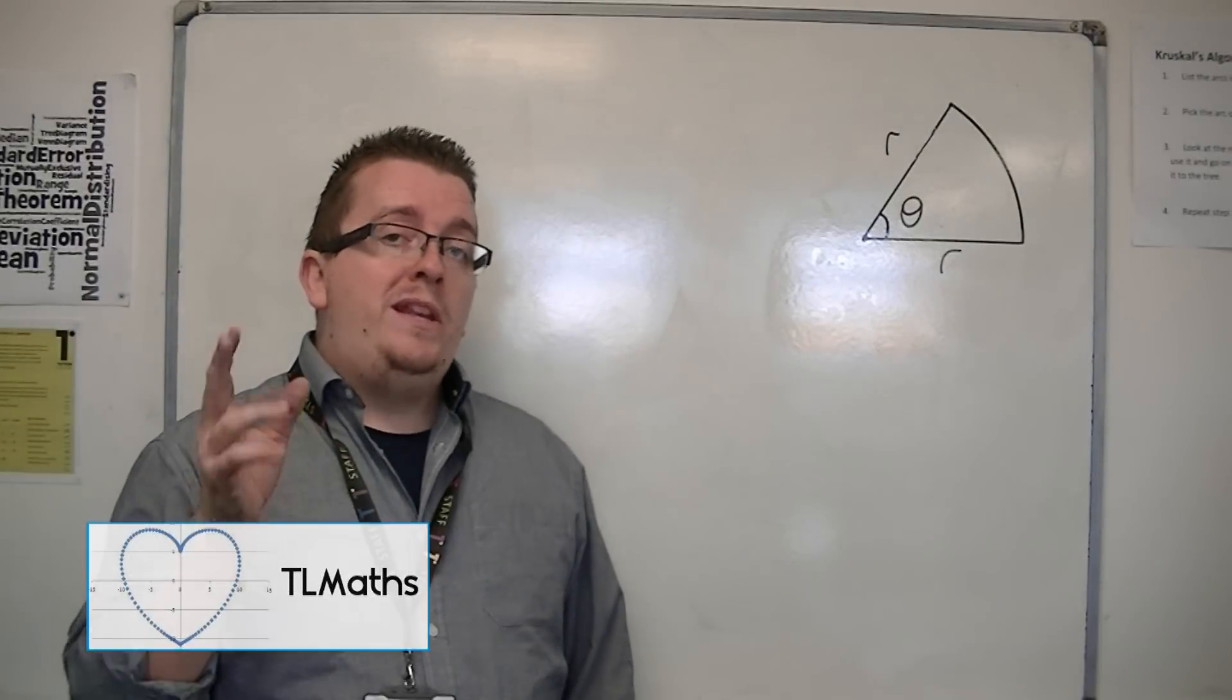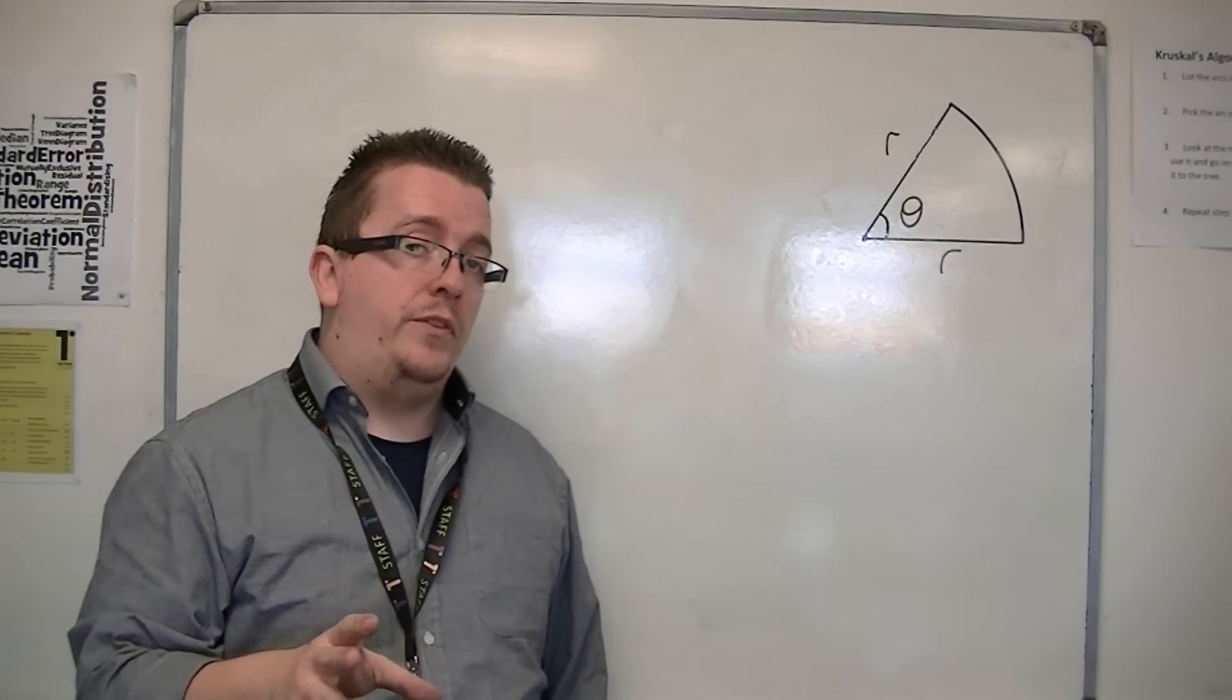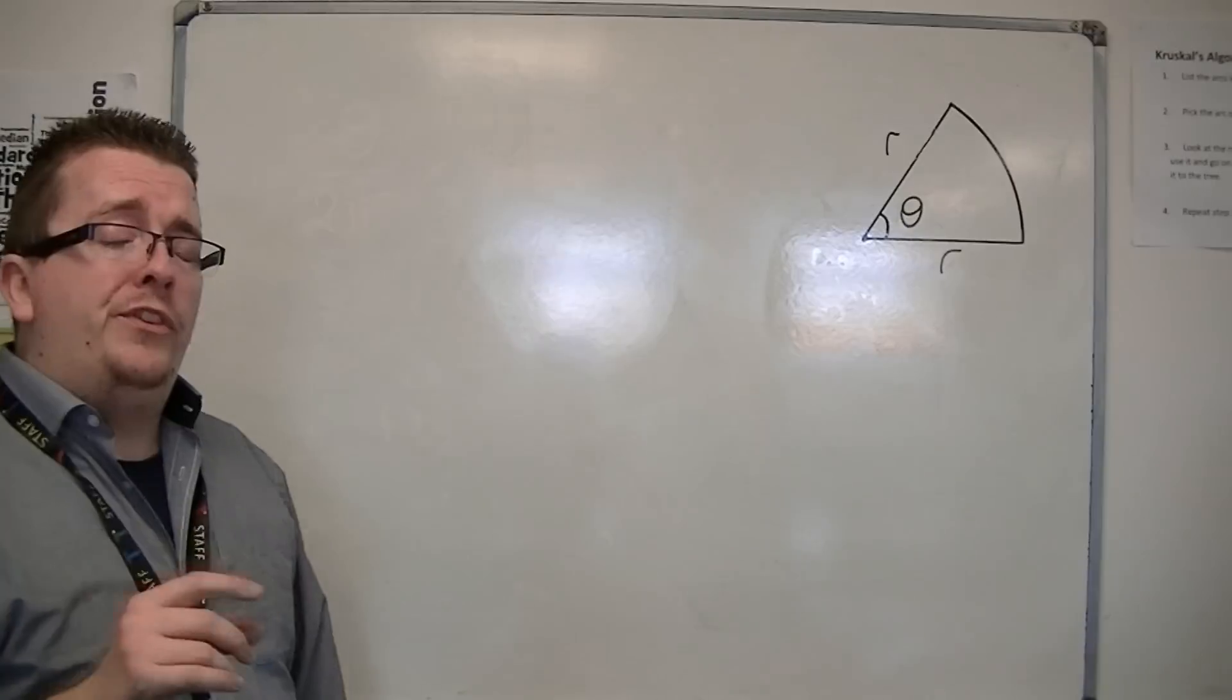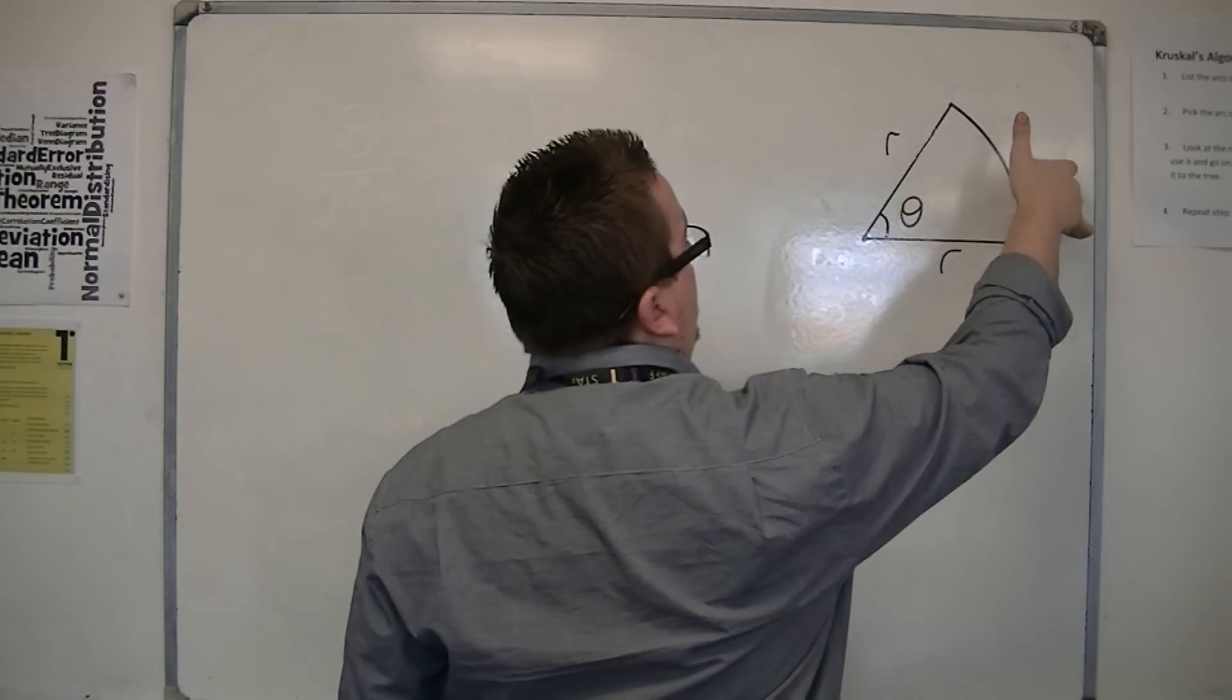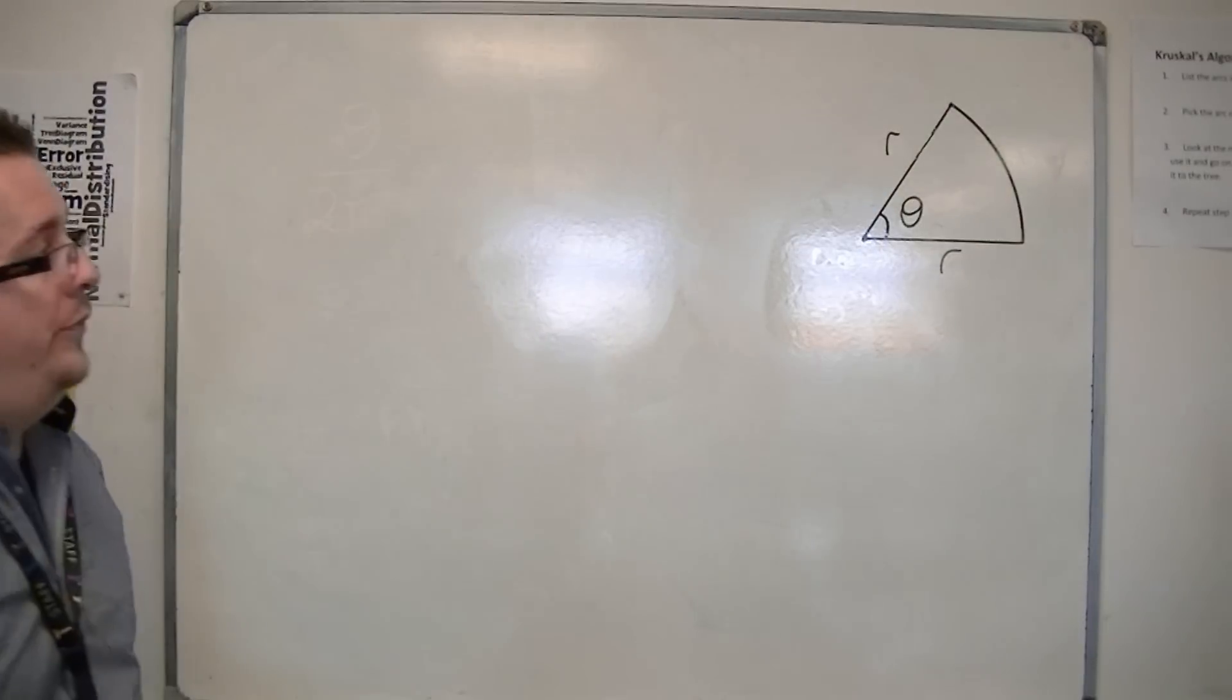So in the previous video we looked at finding the area of a sector. If now I want to find the length of the arc, that is the length of this curved section of the sector on the outside,